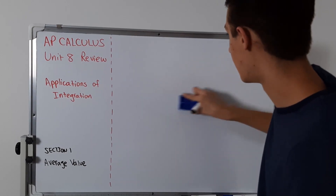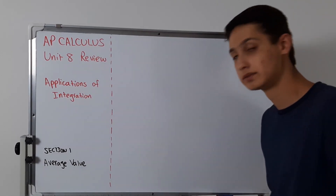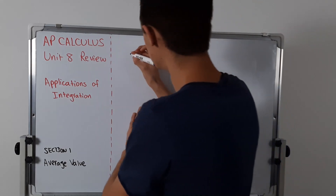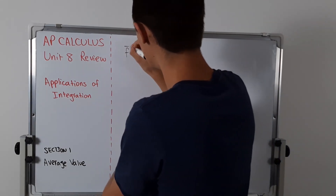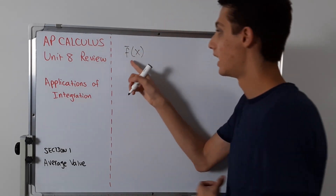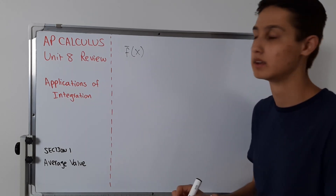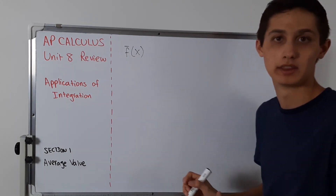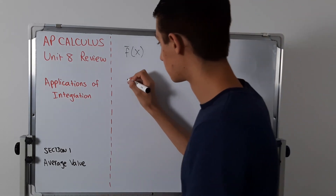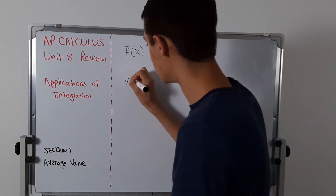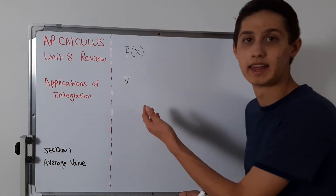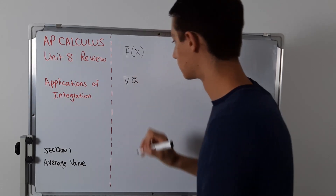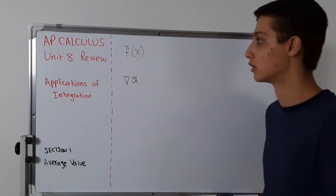So how does that work? I'll give you the formula. This is going to be the average value of f — f with a bar on top — because it's very commonly denoted that way. In physics, for example, if we have average velocity it's going to look like that, average acceleration the same, and so on.